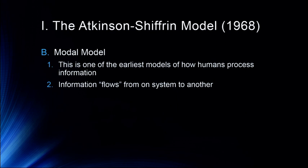This is one of the earliest models of how humans process information. It's called an information processing model because information flows from one system to another. As we move on, we'll see that sensory memory is certainly a real thing, and we'll see an expanded version of shorter-term memory called working memory in later lectures. What is seen here as a unitary short-term memory is actually part of that eventual working memory model. Long-term memory also has a number of subcomponents we'll get into later on.